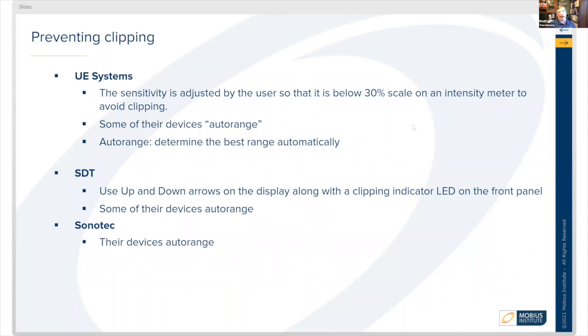Different manufacturers handle clipping differently. For UE Systems, the sensitivity is adjusted by the user, and you should adjust it to about 30% below the scale on the intensity meter to avoid clipping. Some of their devices auto-range, determining the best range automatically.